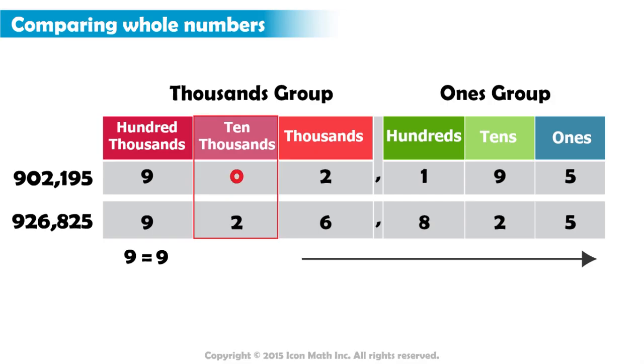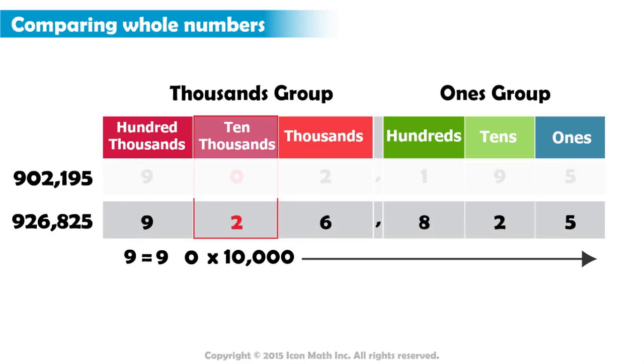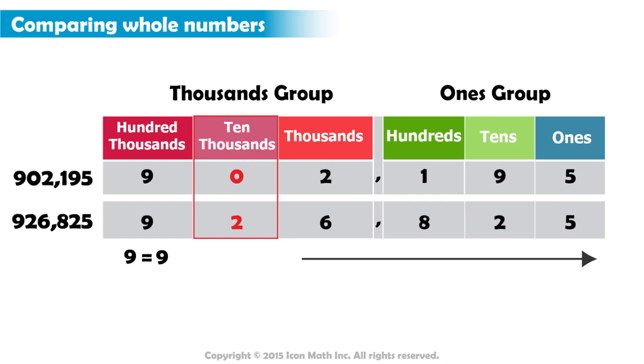In this place, we have zero in the first number and two in the second number. This means the first number has zero ten thousands, while the second number has two ten thousands, or twenty thousand. Since the value that two represents is larger than the value that zero represents in the same place, we can tell that the second number is greater than the first number.